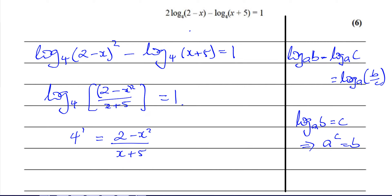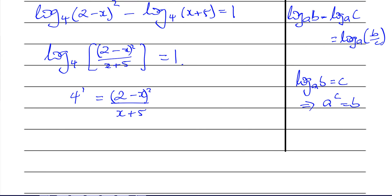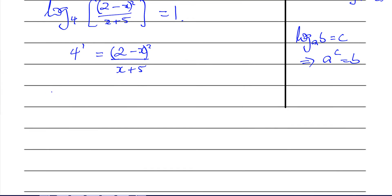This is (2 - x)² like that, be careful. Now we can multiply both sides by (x + 5), so you have 4 times (x + 5) equals (2 - x) all squared.